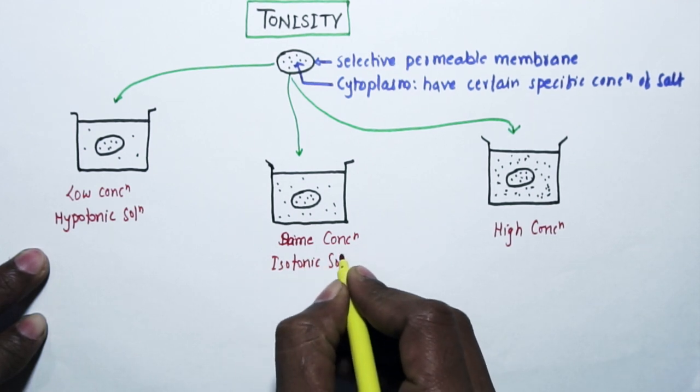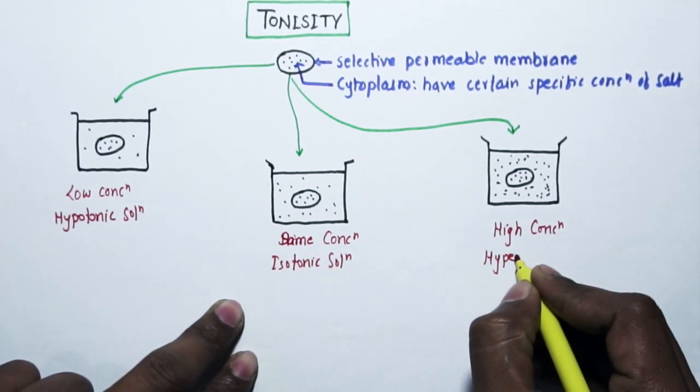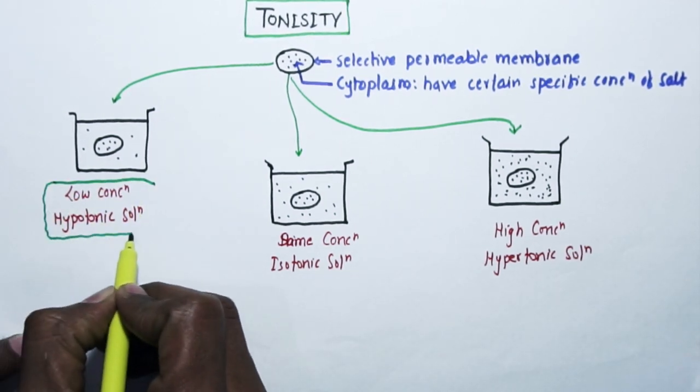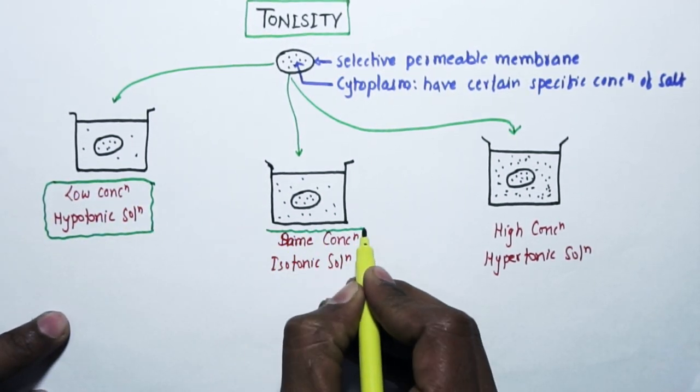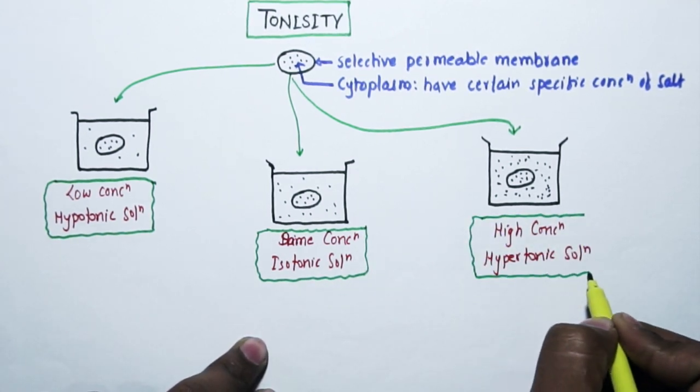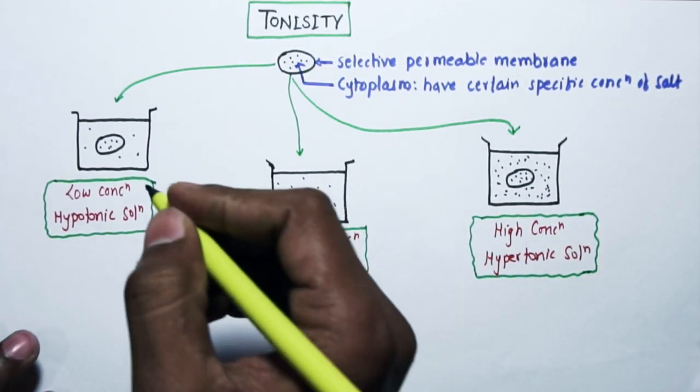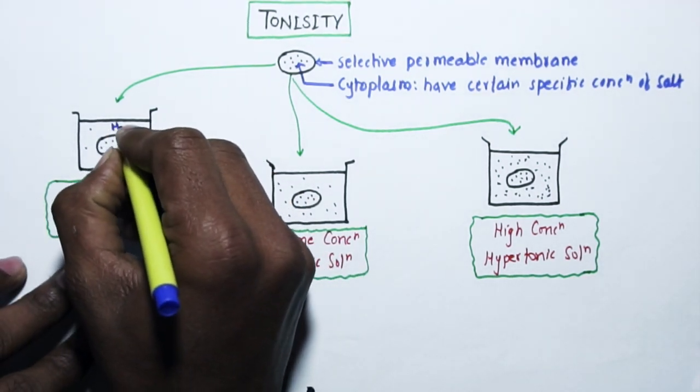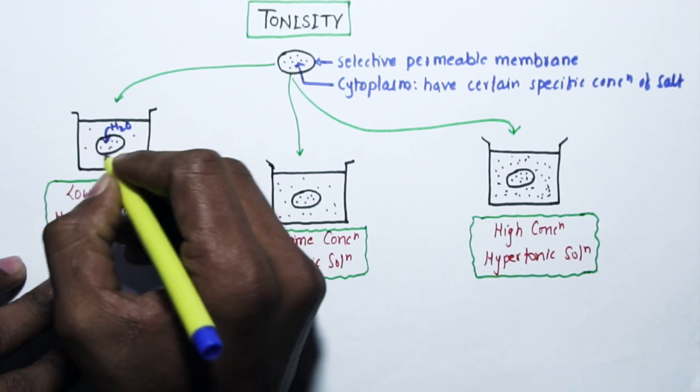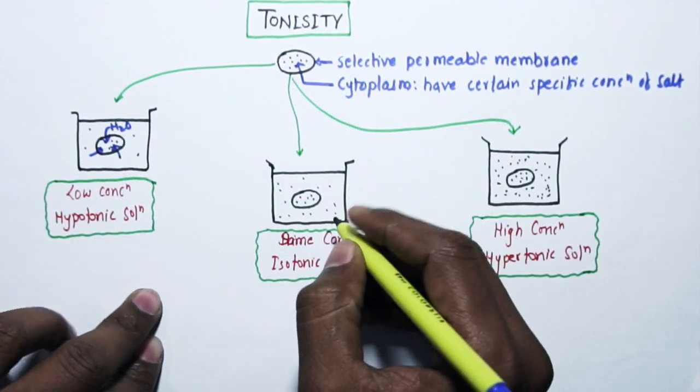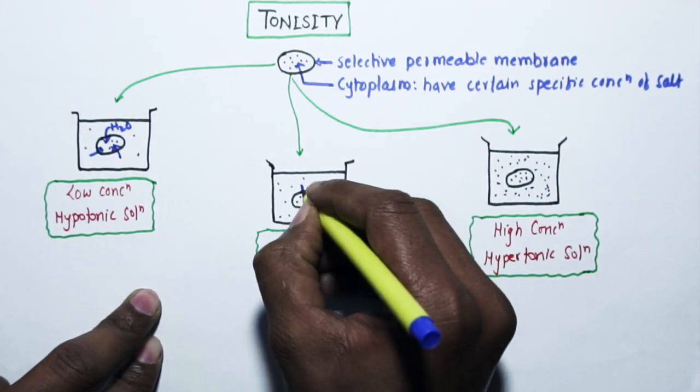The first solution is called hypotonic solution (hypo means less tonic). The second one is called isotonic solution (iso means same), and the third is called hypertonic solution. Now we will see what will happen to the cell if we place it in these solutions. We also know that salts attract water.